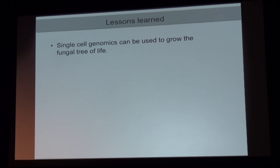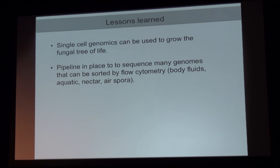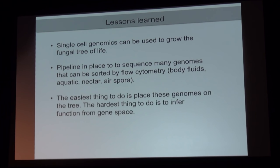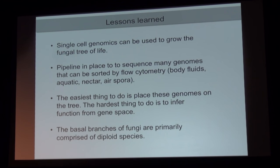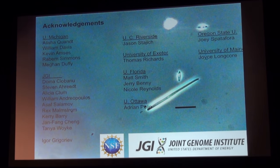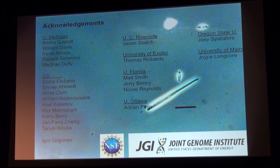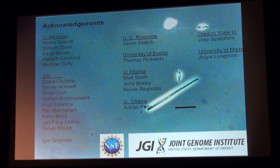In summary, the lessons learned: we can use single cells to grow the fungal tree of life and we have a pipeline in place ready to go. We can easily turn this on for things we can sort — aquatic samples, spores trapped from air, body fluids. The easiest thing is to place organisms in the tree; the hardest thing is to actually infer their ecological function. And of course there's the diploidy finding. Thanks to the great colleagues at JGI — Igor, Tanya, Doina, and Steven for driving this work — and to Leisha Quant in my lab, and Jason and Joey as collaborators on the Zygo Life project.